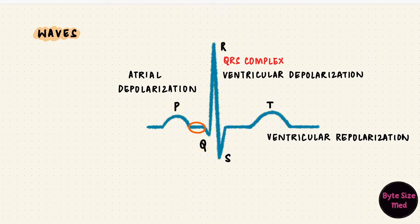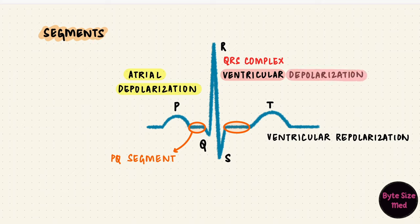In between the waves are segments. There's a PQ segment between the end of the P wave and the beginning of the Q wave. This is from the end of atrial depolarization to the start of ventricular depolarization.